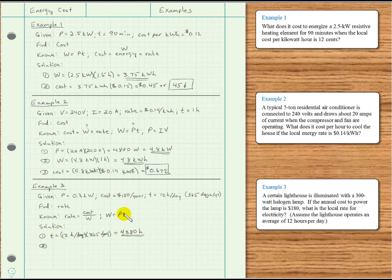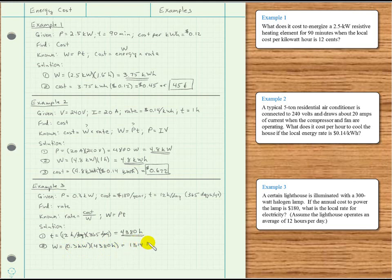Since we now have time and already know power, we can find energy: 0.3 kilowatts times 4,380 hours gives us 1,314 kilowatt hours. That's not what we were asked to find, but now that we know the energy in kilowatt hours and were given the cost, we're ready to find the rate.